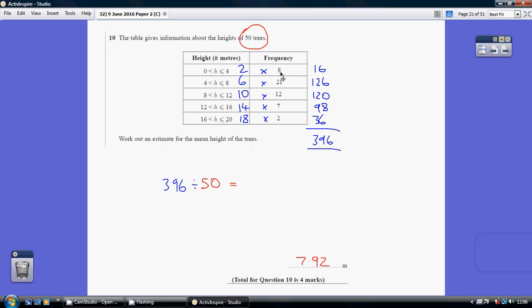Anyway, so we're assuming 8 trees are 2 metres high. So how much height is that in total? 8 times 2 is 16. 21 times 6 is 126, and so on. So we then add up these batches of height to get a total height of the 50 trees of 396 metres.